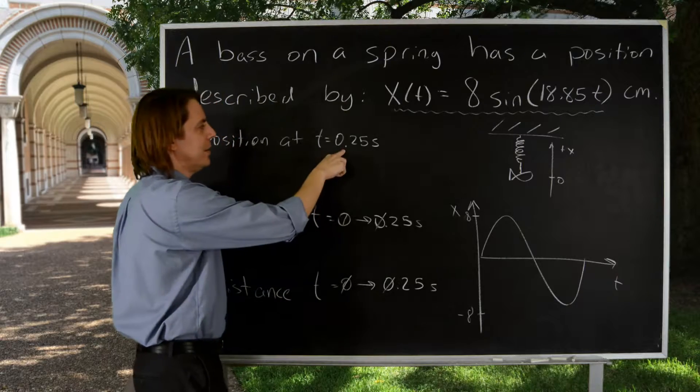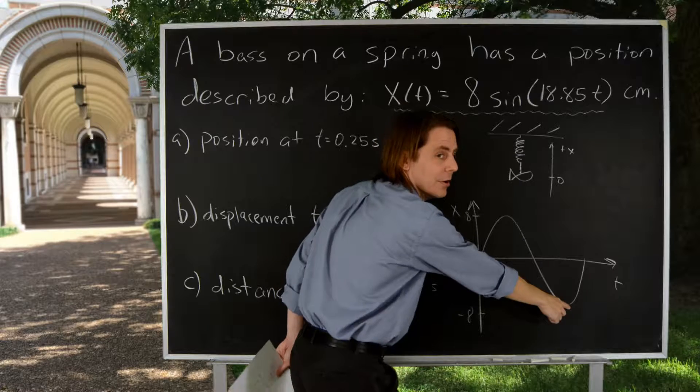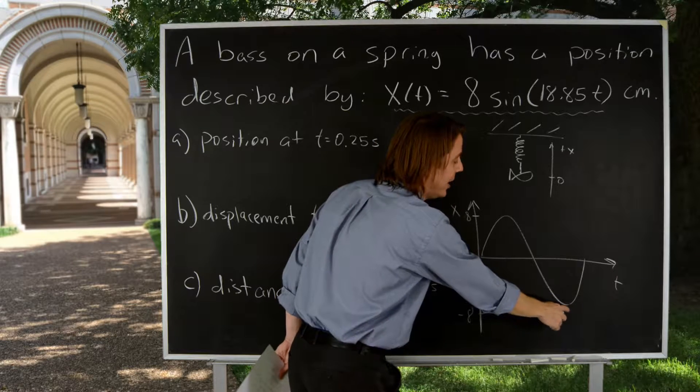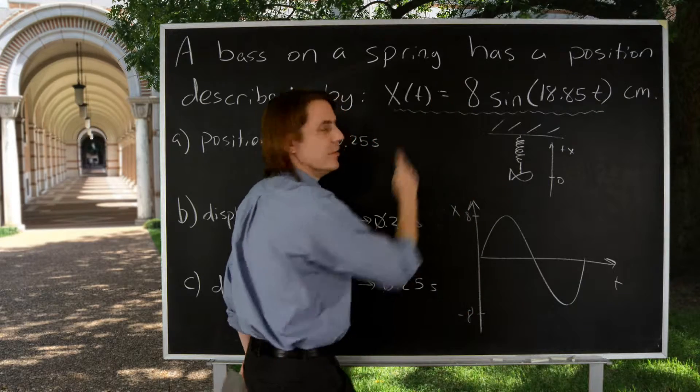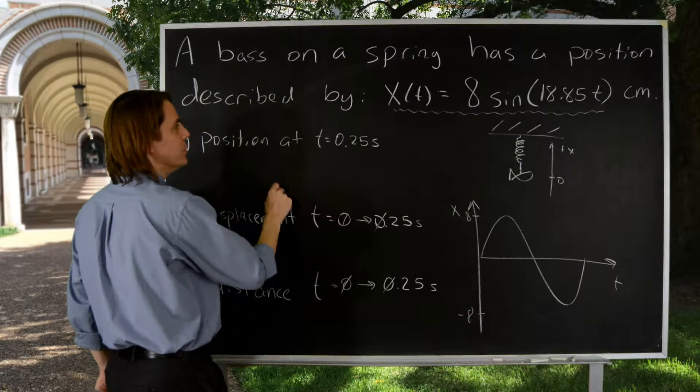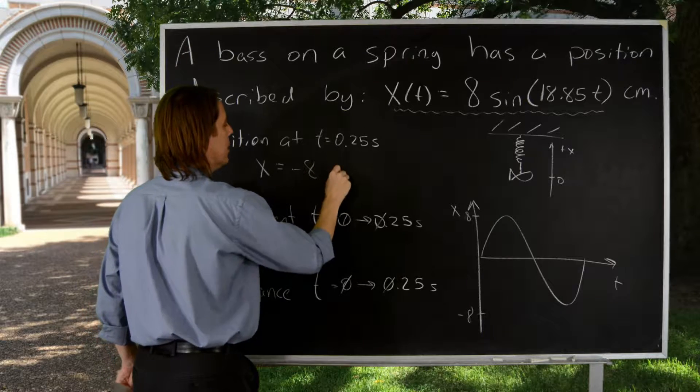Six times pi times a quarter is three halves pi. And the sine of three halves pi, that's right here in the sine wave. Okay, so it's where this is negative one, but negative one times eight is negative eight. So if you plug it in, you should get that x is minus eight centimeters.